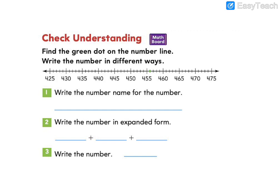Go ahead and pause the video if you need any more time. I'm going to actually start this check understanding with number three. I can see that the green dot is one after 455. That tells me this number is 456.